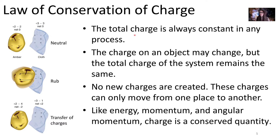Just like we have a law of conservation of energy — where energy is exchanged but not destroyed — there's also a law of conservation of charge. The total charge is always constant in any process. You can have exchange of charge, but if you draw a box around the whole system, the same number of charges are going to be present. So the charge on any object can change, but the total charge of our system remains the same. We don't create new charges; they can only move from one place to another.